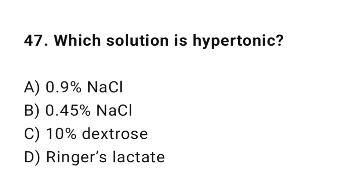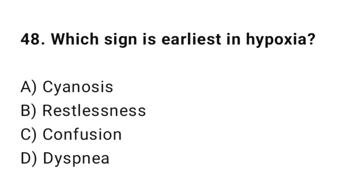Question 47: Which solution is hypotonic? The correct option is C: 0.45% dextrose. Question 48: Which sign is the earliest indicator of hypoxia? The correct option is B: Restlessness.